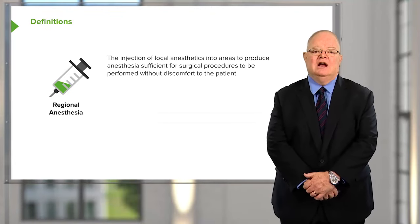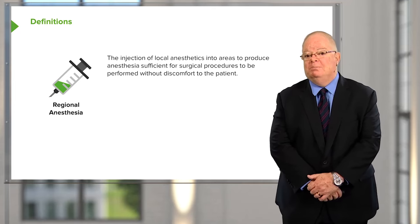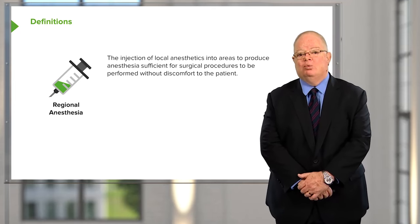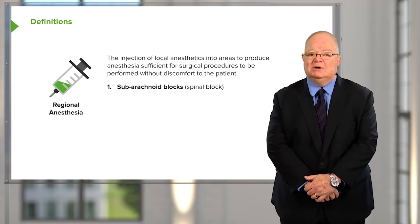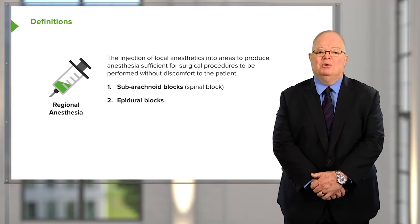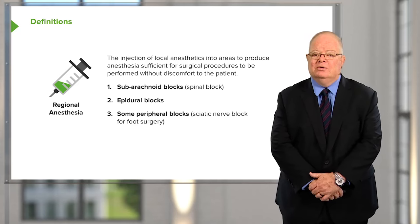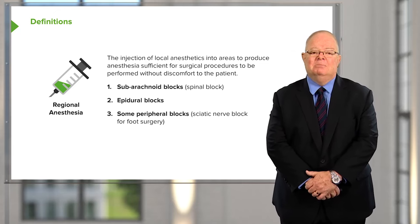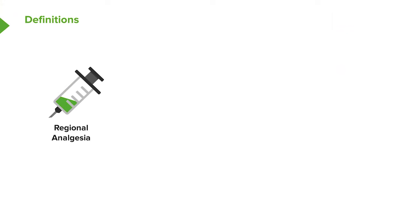The definitions are straightforward. Regional anesthesia is the injection of local anesthetics into areas to produce anesthesia sufficient for surgical procedures to be performed without discomfort to the patient. That's typical of subarachnoid block or spinal block, and also of epidural blocks. With peripheral nerve blocks, it's never quite as clear — we can do surgery with some of these blocks, but in many cases they're inadequate for surgical anesthesia, though they produce excellent post-operative analgesia. Regional analgesia is the injection of local anesthetic into areas to produce analgesia for post-operative pain relief.